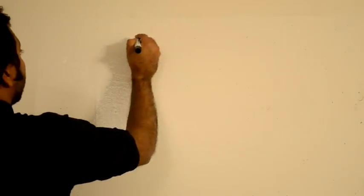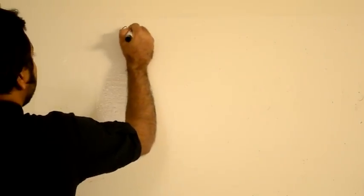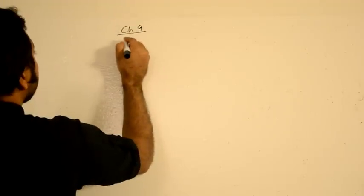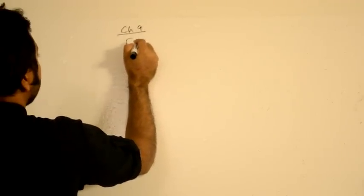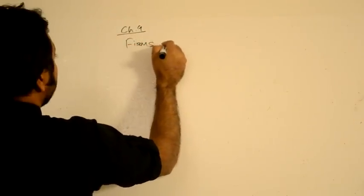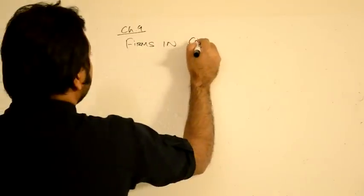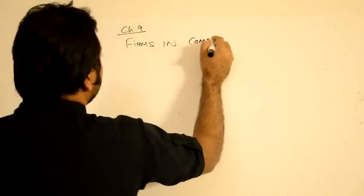Hi guys. Today I'm going to cover a few topics that I have not been able to cover in class in detail. I'm going to cover it today. It's basically chapter number 9 in the book — it's about firms in a competitive market. So this is chapter 9: firms in a competitive market.